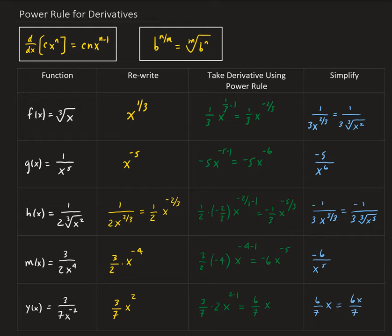Sometimes you may have to rewrite the function using some algebra, and then rewrite it in such a way so that you can apply the power rule to take the derivative, and then again use algebra to simplify the result.